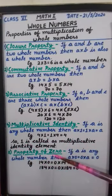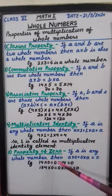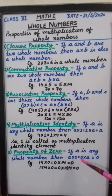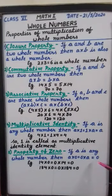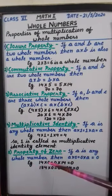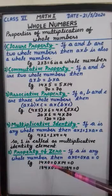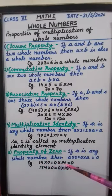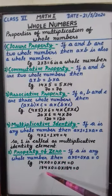Coming to the next property: Property of zero. If A is any whole number then A multiply by zero is same as zero multiply by A, and the result will be zero. That means if we multiply a whole number with zero, the answer will be zero only. For example, fourteen multiply by zero is same as zero multiply by fourteen, and the answer is zero.